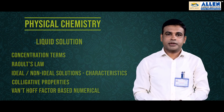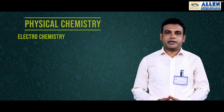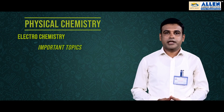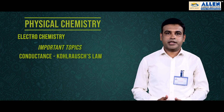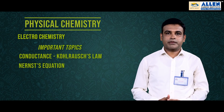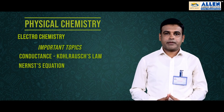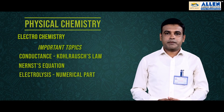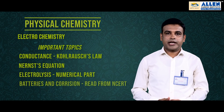The next chapter is Electrochemistry — again a very important chapter. The conductance part yields one question. Electrode potential and cell potential using the Nernst equation are key. Electrolysis numericals are important. Batteries and corrosion are necessary to read from NCERT, as they can ask simple reaction-identification questions.